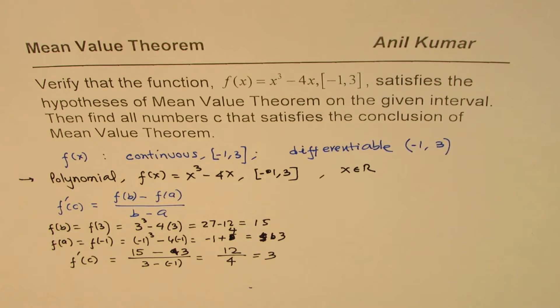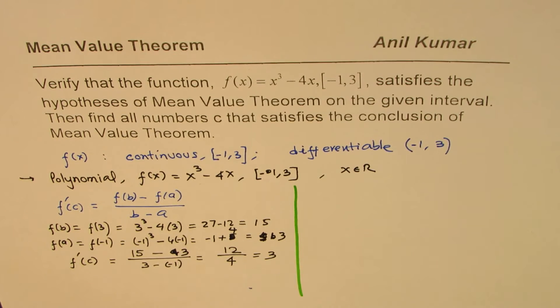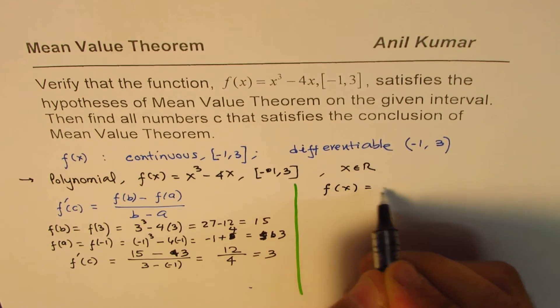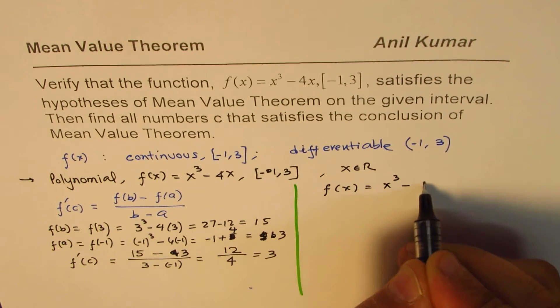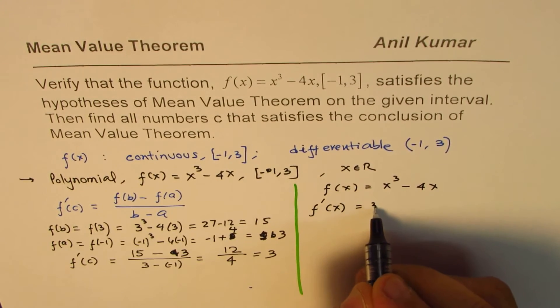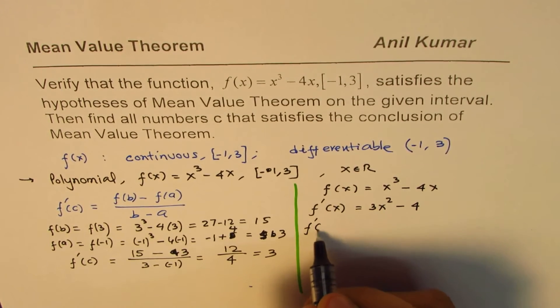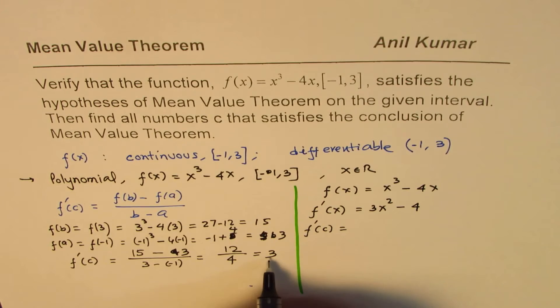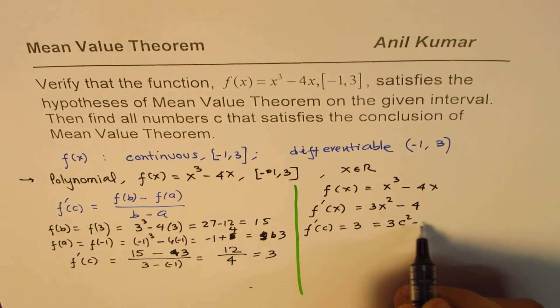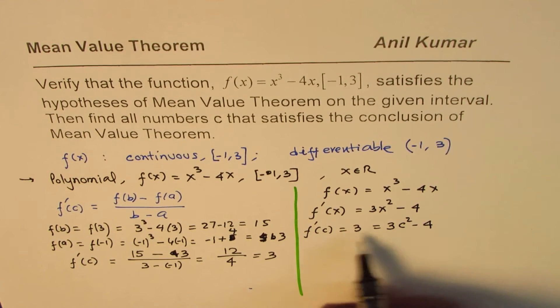Now, to find what c is, we can actually find the derivative, equate it to 3. So, what we are given here is the function f of x equals x cubed minus 4x. So, f dash x is equals to 3x squared minus 4. Now, since we know that f dash c is equal to 3, we can write c here. So, we have 3c squared minus 4, and find what c is.